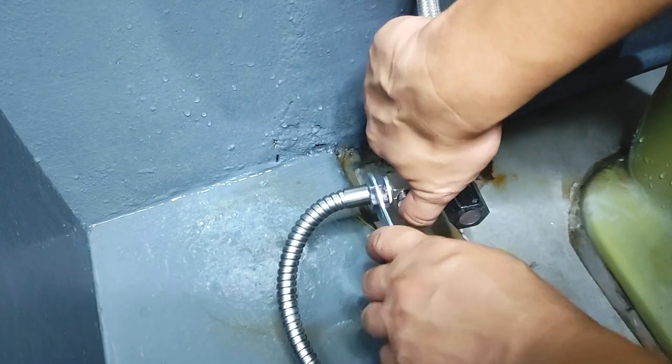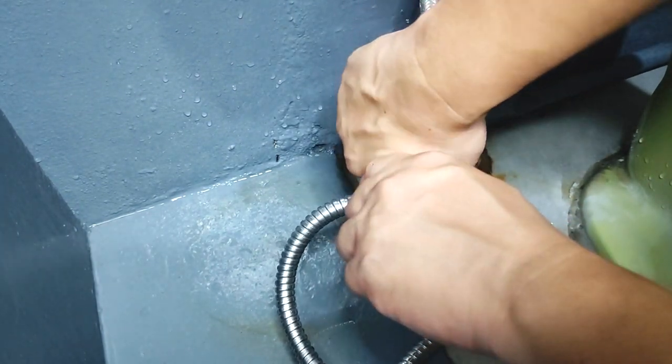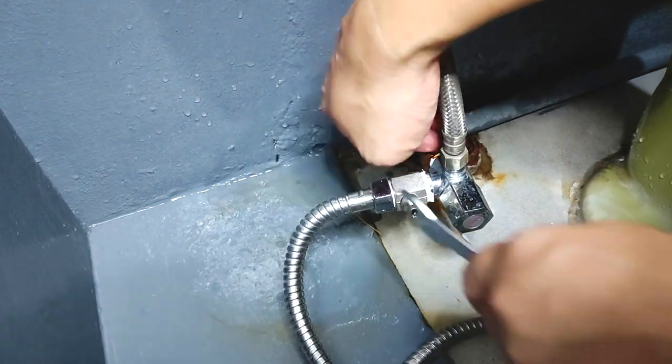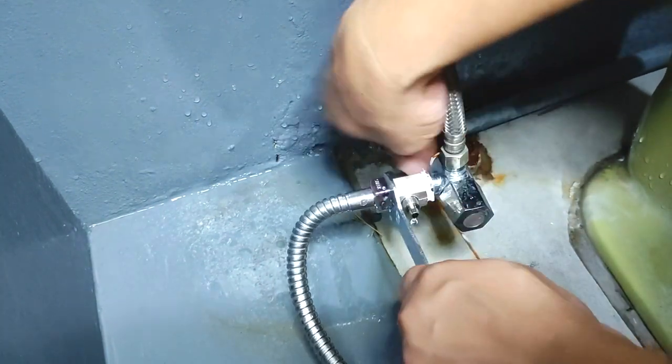If you don't have a bidet spray to begin with, then you can connect the metal adapter between your water inlet valve and the flexible hose that leads up to your toilet tank.